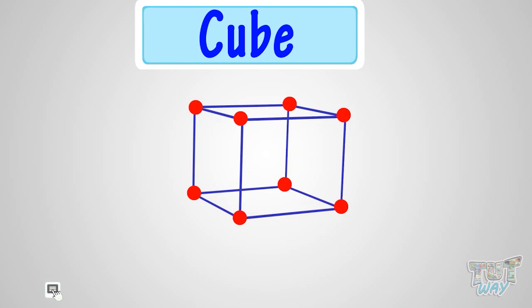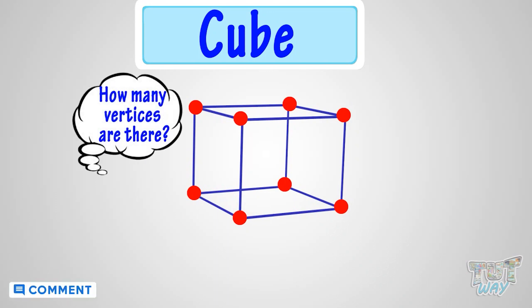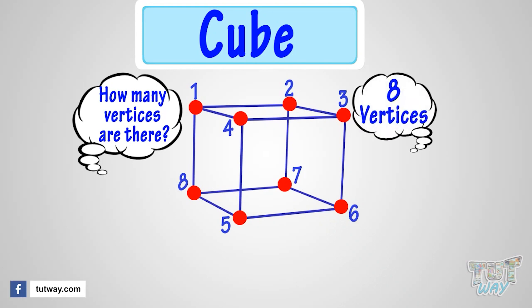So let's count its vertices. 1, 2, 3, 4, 5, 6, 7, 8. Yeah! So a cube has 8 vertices.